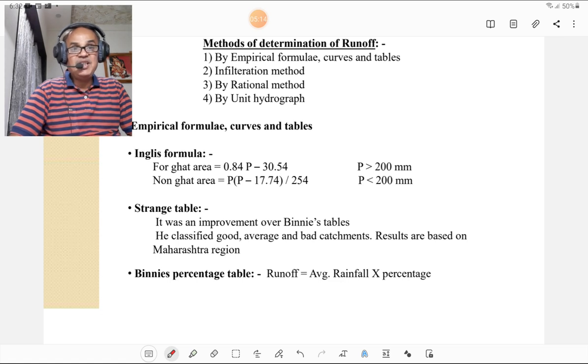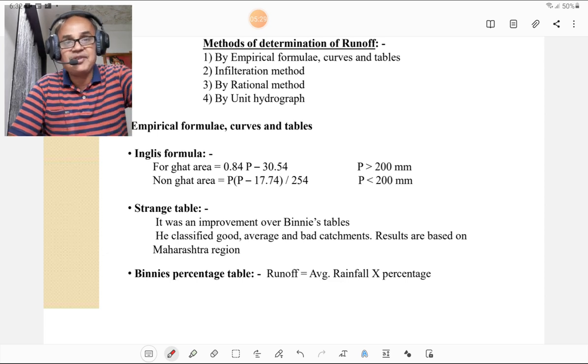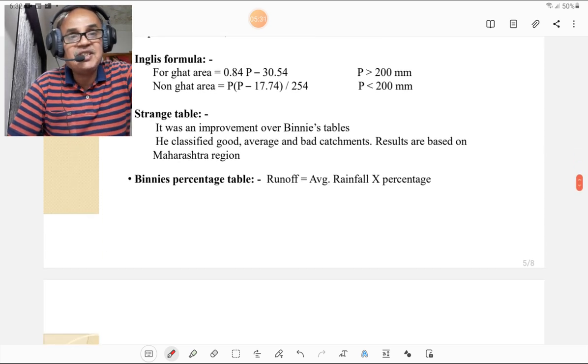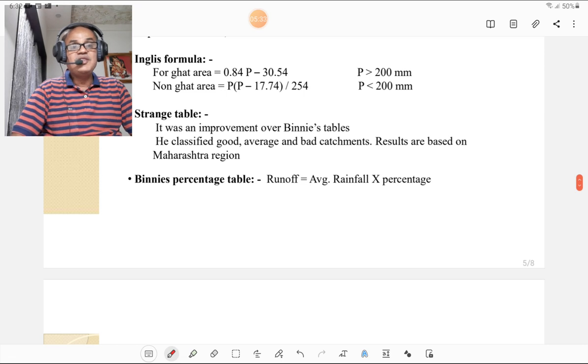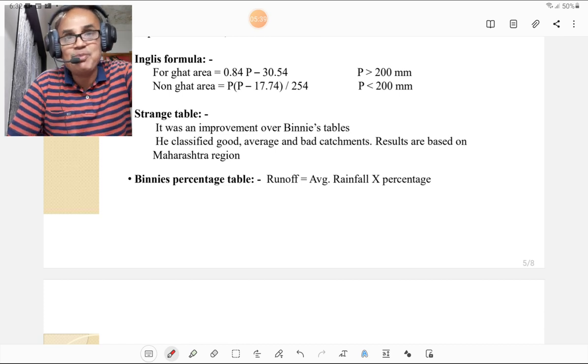Using Strange table we can determine the runoff. It was the improvement over the Binnie's table. He classifies the good, average and bad catchments. Results are based on Maharashtra region. The Strange table is developed especially for Maharashtra. Then Binnie's percentage table. Runoff is calculated by average rainfall multiplied by certain percentage, and that percentage is given in Binnie's percentage table.